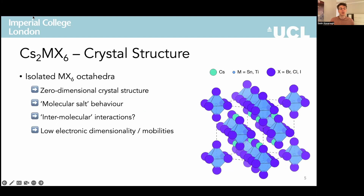Looking closer at the structural properties, the 50% occupation of the cation site results in isolated MX6 octahedra with a zero-dimensional crystal structure. This suggests the material is likely to behave akin to a molecular salt in many ways, with properties governed by short-range MX6 metal-ligand interactions as opposed to long-range band-like interactions, and so we might expect significant intermolecular-type interactions, as well as low electronic dimensionality and mobilities.